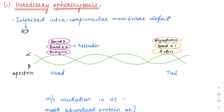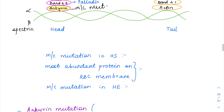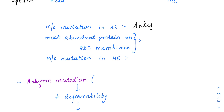Hereditary spherocytosis is going to be inherited under autosomal dominant inheritance, so every generation is going to be affected. In the RBC membrane structure, along with alpha and beta spectrin, there are multiple proteins arranged. In hereditary spherocytosis, the ankyrin protein is going to be mutated — the most common mutation in hereditary spherocytosis is ankyrin mutation. The second most common is band 3 mutation.